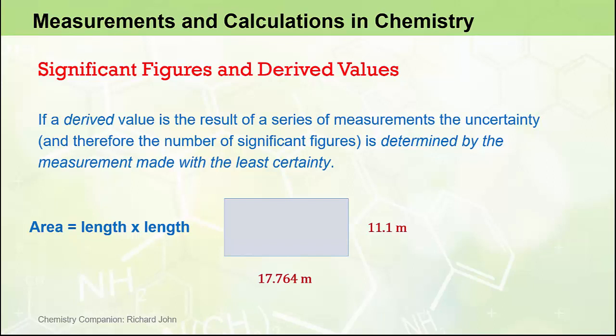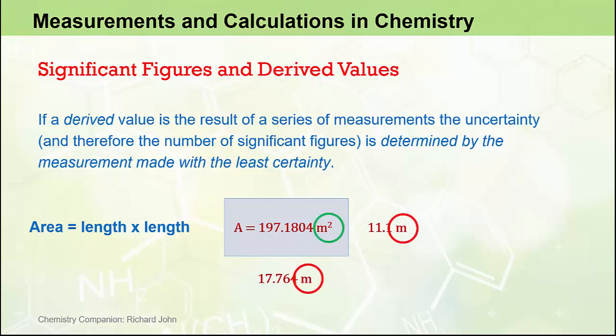To get the area, we use our calculator to multiply these two measured values together and get the result of 197.1804 metres squared. We get the magnitude of the area by multiplying together the two magnitudes of the individual length measurements, and we get the derived unit, metres squared, by multiplying the two units together. Remember, what we do to the magnitude is what we do to the units as well.